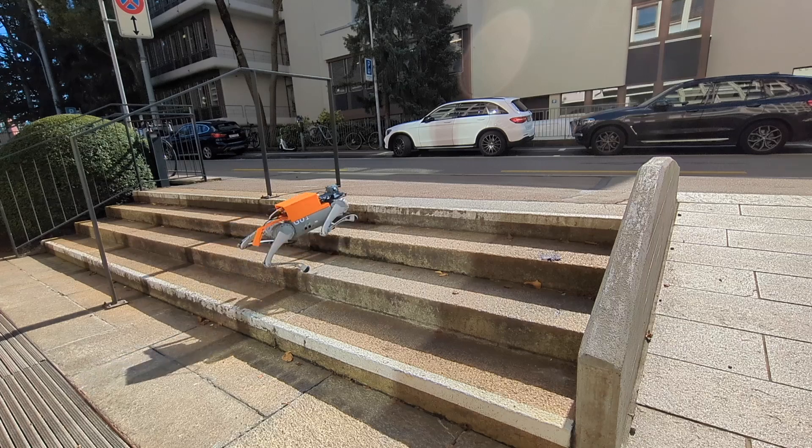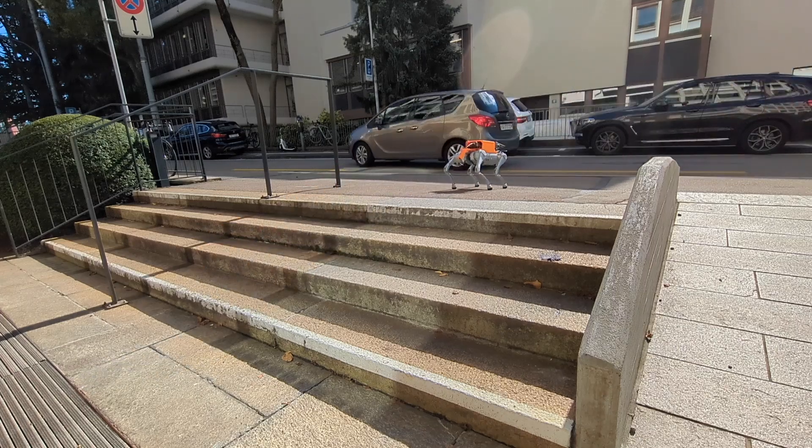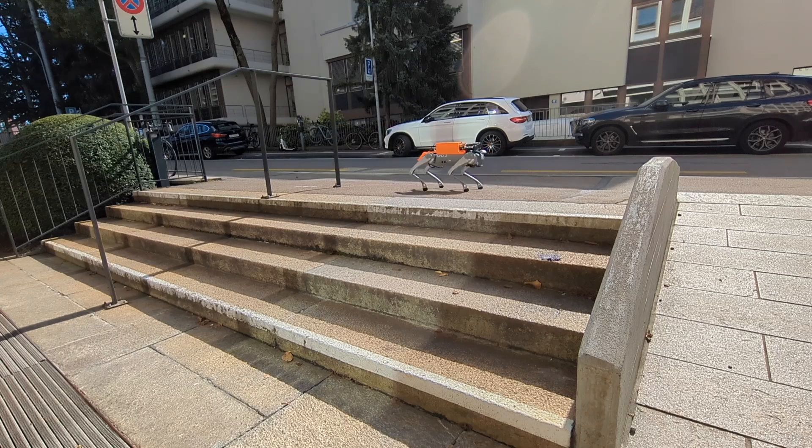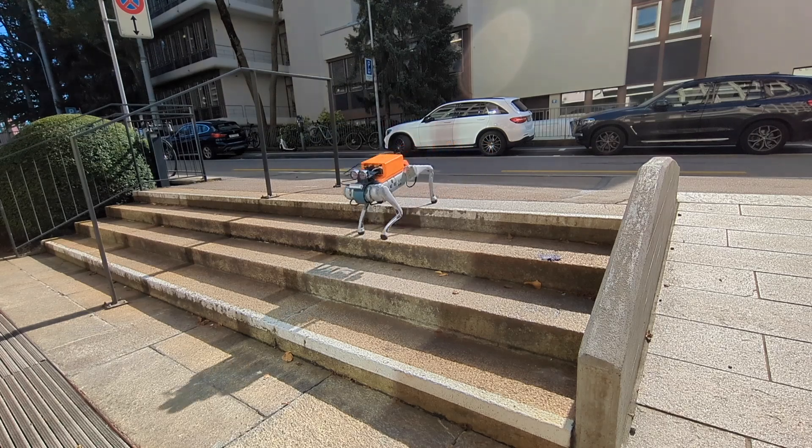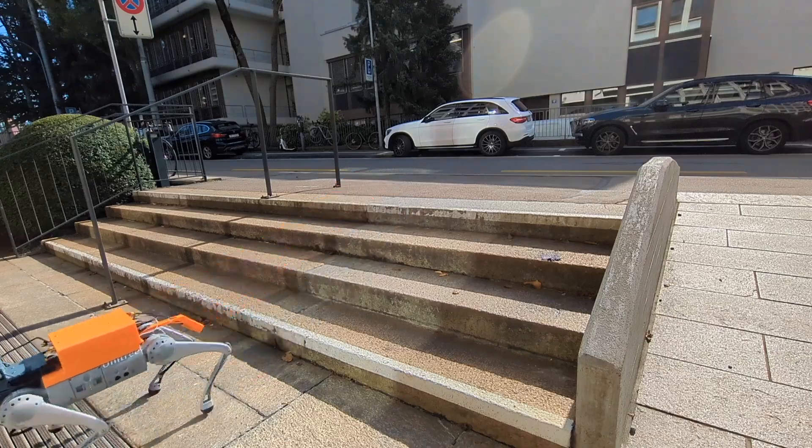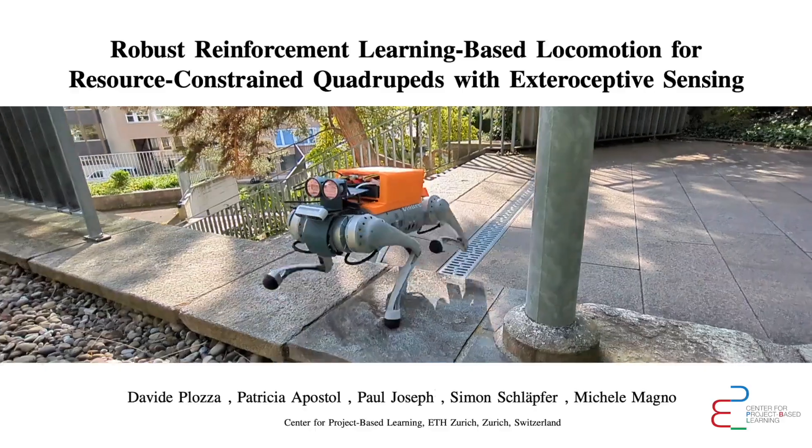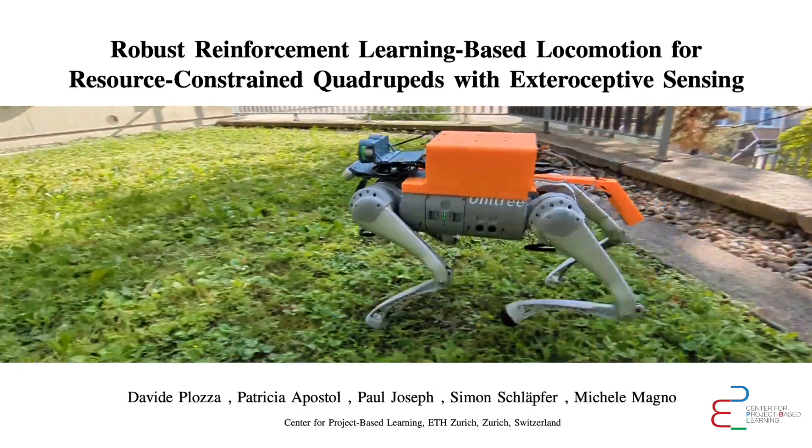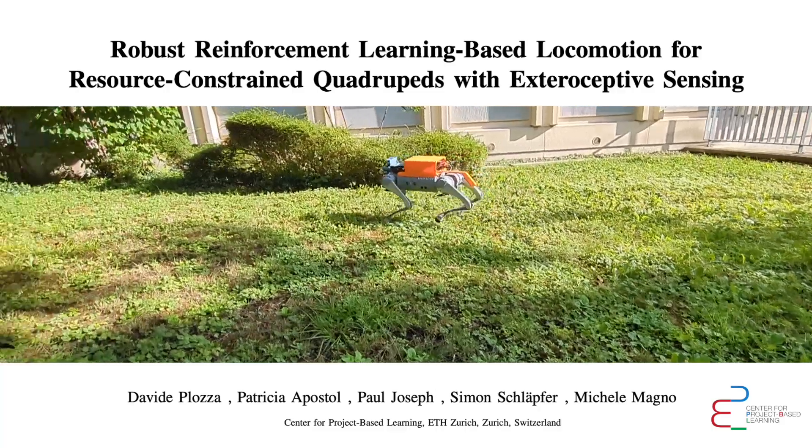Real-time and robust locomotion on uneven terrains remains a challenging task in small-scale and resource-constrained quadrupedal robots. Especially accurate and fast terrain perception continues to be difficult. To address this, we present our work: robust reinforcement learning-based locomotion for resource-constrained quadrupeds with exteroceptive sensing.